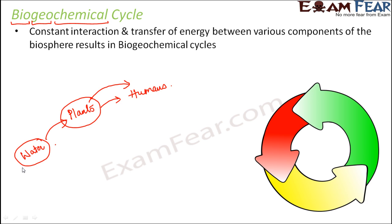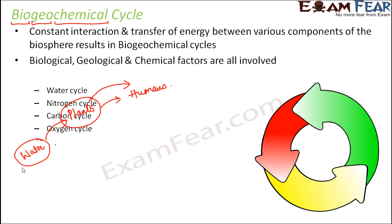In biogeochemical cycles, not every cycle is a biogeochemical cycle, but certain biogeochemical cycles tell us how a particular component is exchanged between different parts of the biosphere — for example, how water gets cycled from the earth to the atmosphere to different living organisms. All the biological, geological, and chemical factors are involved, and that is why they are called biogeochemical. We will talk about four biogeochemical cycles: the water cycle, nitrogen cycle, carbon cycle, and oxygen cycle.